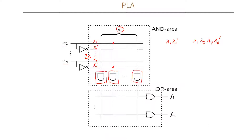The other part of our PLA is the OR area, which takes the output from the AND gates as inputs, and is also completely configurable. For example, if the first AND gate uses X1' and XN', and the second AND gate uses X1 and XN', then connecting these two AND gate outputs to the first OR gate gives us F1 = X1'·XN' + X1·XN'. In total, this PLA can support up to M such sums of products — though this particular expression is not the best form, and is shown just for the sake of example.